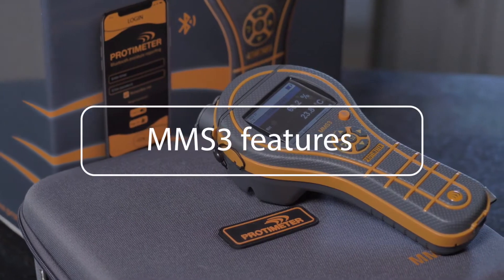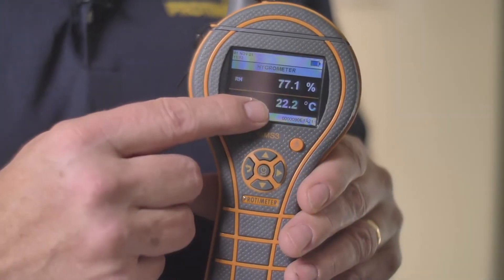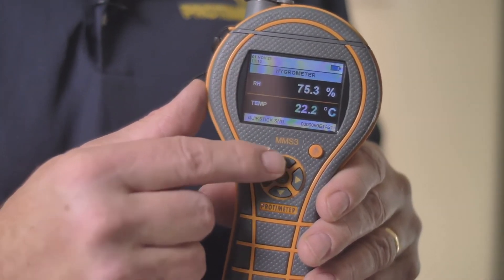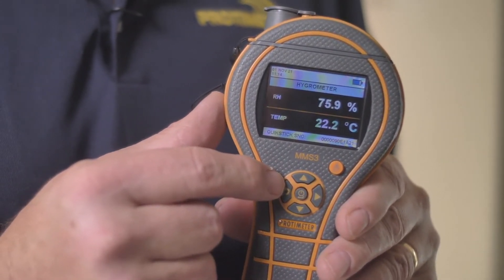The MMS3 is our third generation of moisture measurement system. Let's have a closer look at some of the features. The first thing you'll see is this large color screen and a D-button control pad that allows you to navigate through the menus extremely easily.